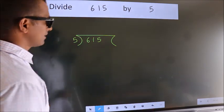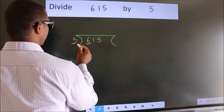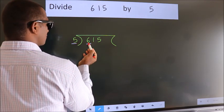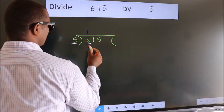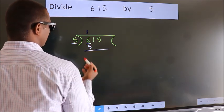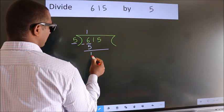Next, here we have 6, here 5. A number close to 6 in the 5 table is 5 once, which is 5. Now, we should subtract. We get 1.